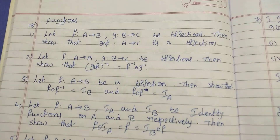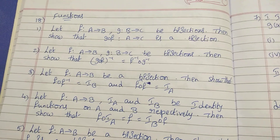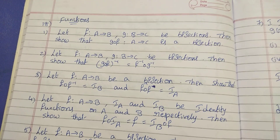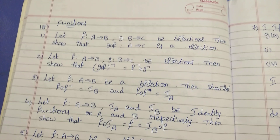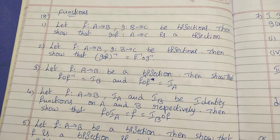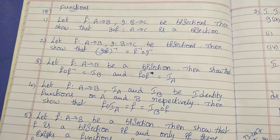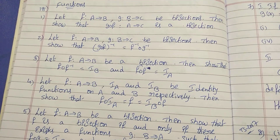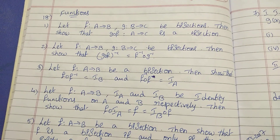Next: let F from A tends to B be a bijection. Then show that F circle F inverse equals IB, and F inverse circle F equals IA. Identity functions: let F from A tends to B, IA and IB be identity functions on A and B respectively. Then show that F circle IA equals F equals IB circle F.